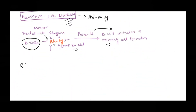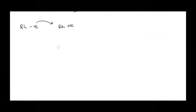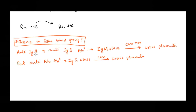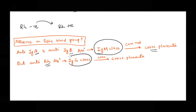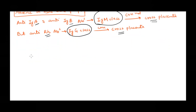Now two questions come to mind. First: we say the mother mounts an immune response because she lacks the RH antigen. Why doesn't this happen when the mother's ABO blood group is different from the fetus's blood group? The reason is that antibodies against antigen A and antigen B are of the IgM class — the largest antibody — which cannot cross the placenta. But antibodies against the RH antigen are of the IgG class, which can cross the placenta and therefore cause harm to the fetus.